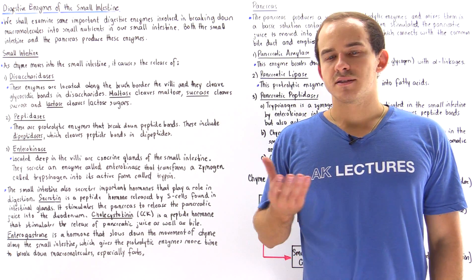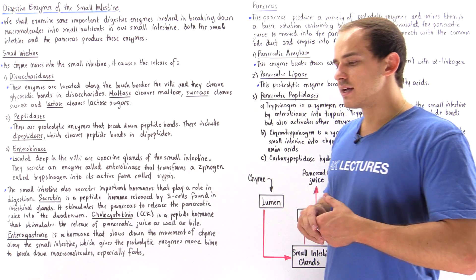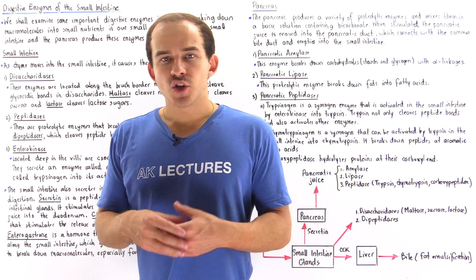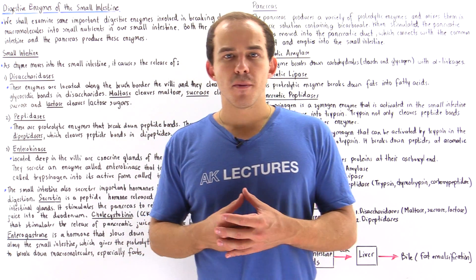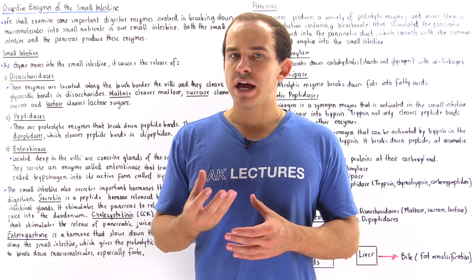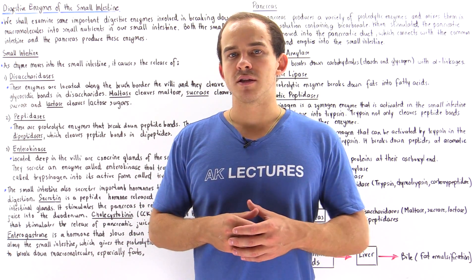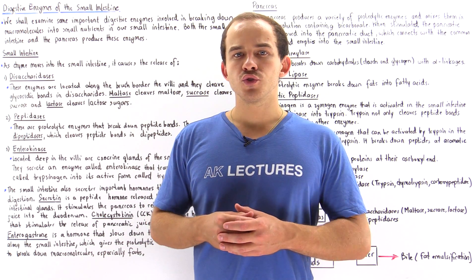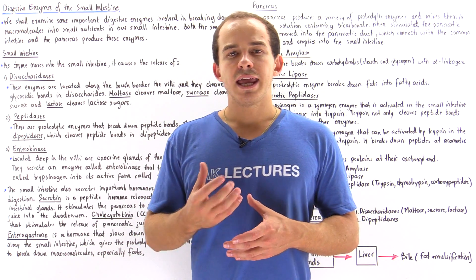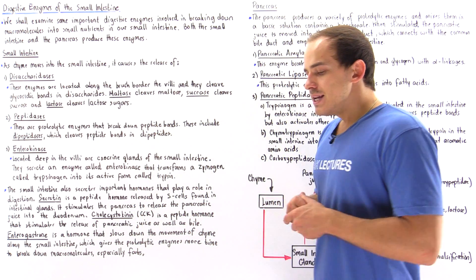Previously we discussed the small intestine and we said that in the small intestine we have digestion and absorption taking place. We break down the many macromolecules into their constituent units and then the enterocytes, the cells of the small intestine, absorb those nutrients and transport them into the bloodstream and into the lymph system of our body.